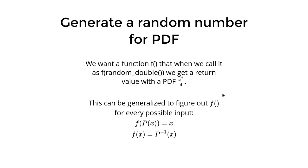Then, we want the function f that when we call it as f(random_double), we get a return value with CDF x squared over 4, which is our previous CDF. Because our random_double, if you remember correctly, is a uniform distributed random variable from 0 to 1. So we want to map that into our PDF. This can be generalized to figure out our f for every possible input, which is f that taking a CDF of x is just x itself. Or we can also say f is inverse of CDF. This is the most important part of this book.